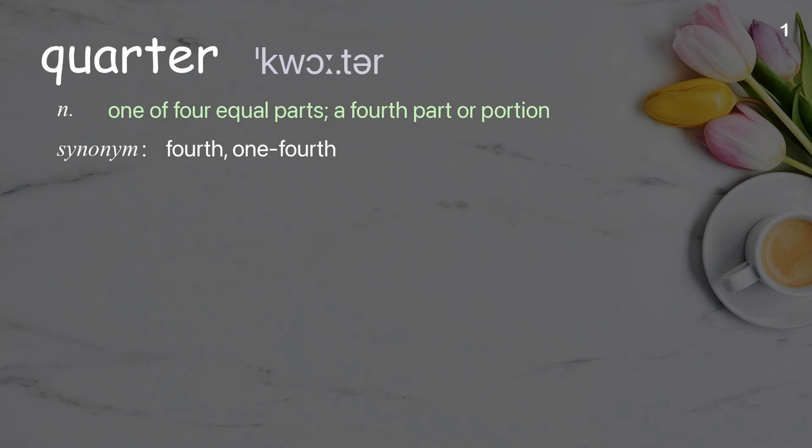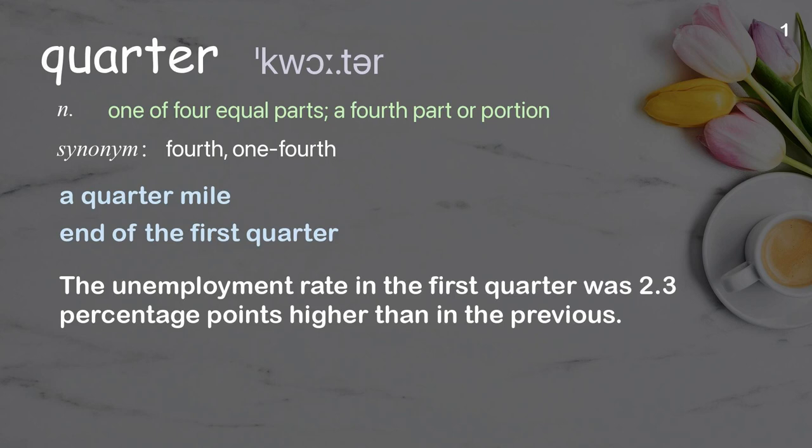Quarter: One of four equal parts, a fourth part or portion. Examples: a quarter mile, end of the first quarter. The unemployment rate in the first quarter was 2.3 percentage points higher than in the previous.